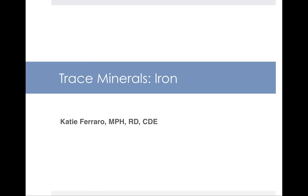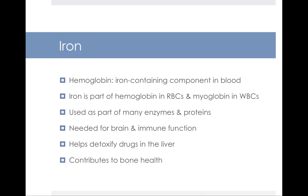Hello and welcome to this lecture on the trace mineral iron. Iron is responsible for promoting adequate hemoglobin. Hemoglobin is the iron-containing component in your blood. Iron is part of your hemoglobin in your red blood cells and part of your myoglobin in your muscle cells. Iron is used as part of many enzymes and proteins, and it's needed for brain and immune function. Iron helps detoxify drugs in your liver and it also plays a minor, though still important, role in contributing to your bone health.